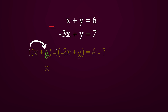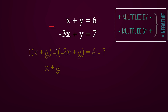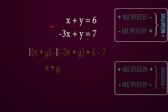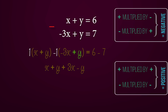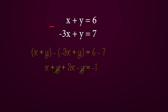In this case the term outside the second bracket is negative 1, since the sign in front of a number goes with that number. Expanding the first bracket we get x and y. For the second bracket: negative 1 by negative 3x gives positive 3x since the signs are the same, and negative 1 multiplied by positive y gives negative y since the signs are different. The y's cancel to give us 4x is equal to negative 1, which gives us x is equal to negative 1 over 4.